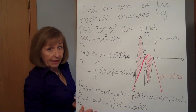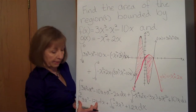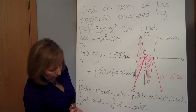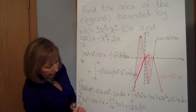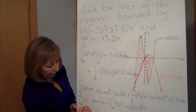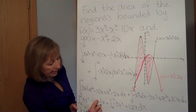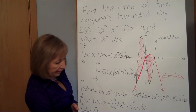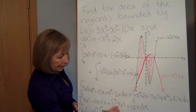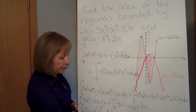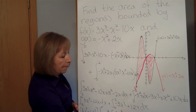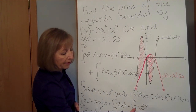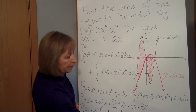Now we use the fundamental theorem of calculus — find the antiderivative and plug in the top number minus the bottom number. Adding 1 to the exponent and dividing gives ¾x⁴ - 6x² for the first part, evaluated from -2 to 0. For the second part the antiderivative is -¾x⁴ + 6x², evaluated from 0 to 2.